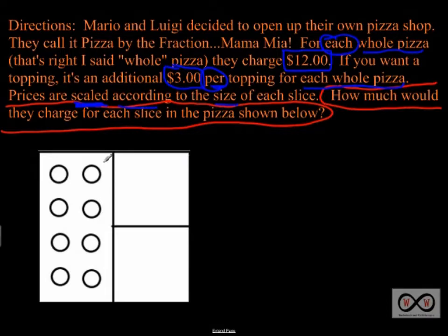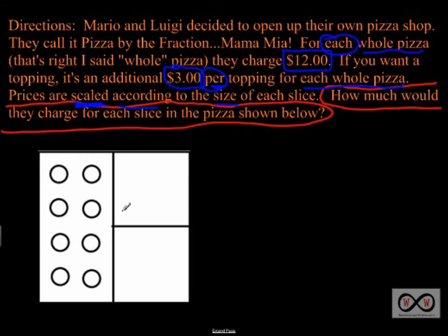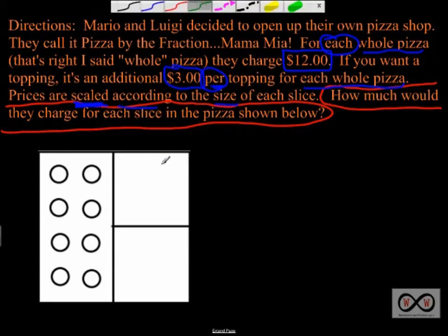Now we can think about this pizza. There are three different slices, and you can see a clear difference in size between one slice and the other two. Since prices are scaled according to size, you can expect the larger slice to be at least twice the price of the smaller ones — it's twice the size, so it'll be twice the price. There are also additional toppings on that side of the pizza. Let's tackle the smaller slices first.